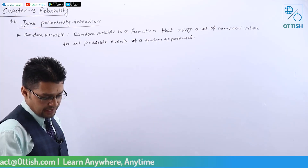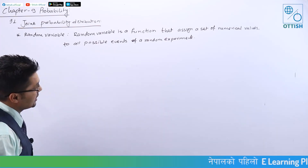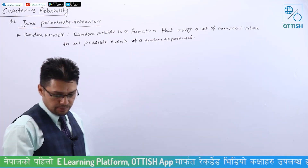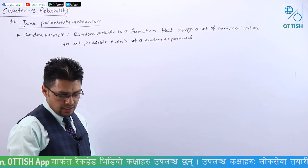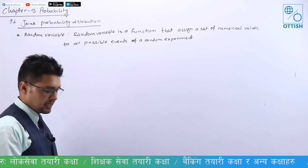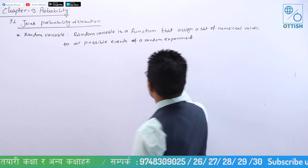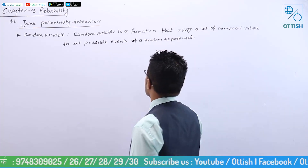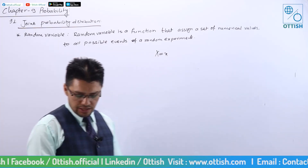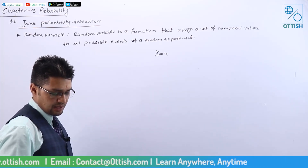A random variable is denoted by capital letters of the English alphabet. The value of a random variable is denoted by small letters — so X is the random variable and x is its value. A random variable can be univariate, bivariate, or multivariate.